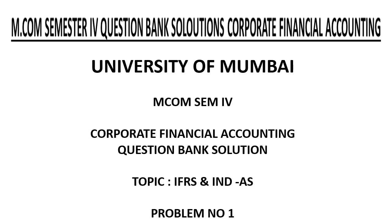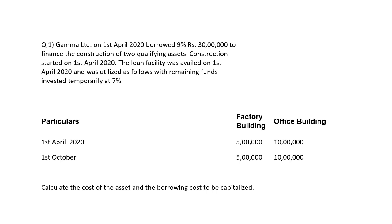Problem No. 1. Gamma Ltd on 1st April 2020 borrowed Rs. 30 lakh at 9% to finance the construction of two qualifying assets. Construction started on 1st April 2020. The loan facility was utilized as follows with remaining funds invested temporarily at 7%. Funds given on 1st April 2020: factory building 5 lakhs, office building 10 lakhs; on 1st October: factory building 5 lakhs, office building 10 lakhs. We are asked to calculate the asset value and the borrowing cost to be capitalized.